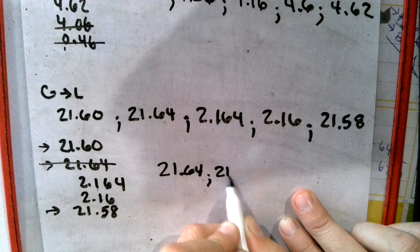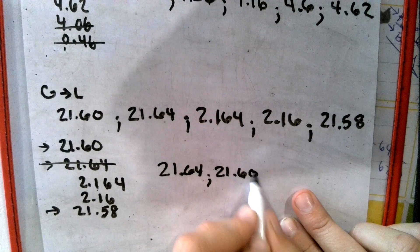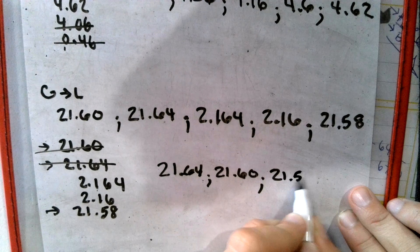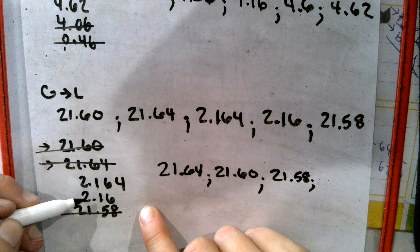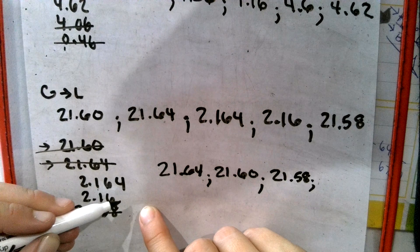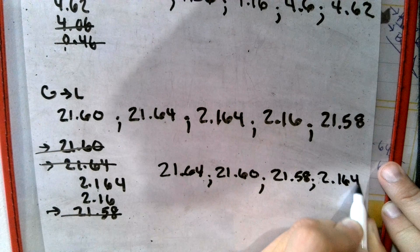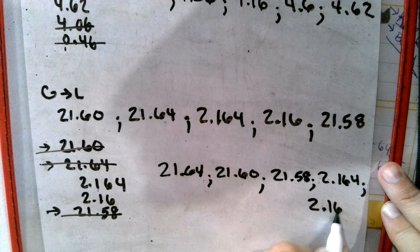This one was our next biggest because we were battling between those two. And it started out like that, so we can put it. Then we have the next 21, 21.58 hundredths. And now we're down to the 2s. So we have 2s are the same, 1s are the same, 6s are the same, a 4 and a nothing. Well, what's our bigger one? The 4. So we put 2 and 164 thousandths, and last but not least, 2 and 16 hundredths.